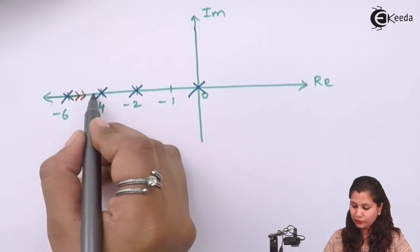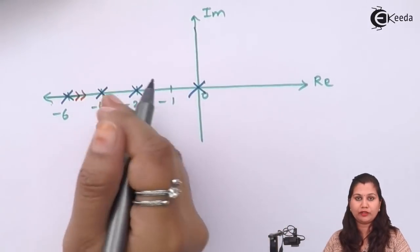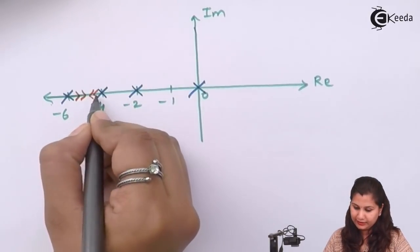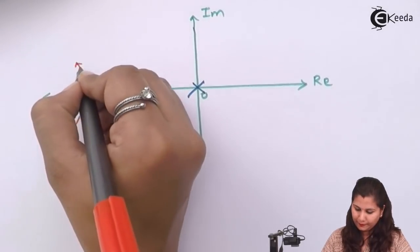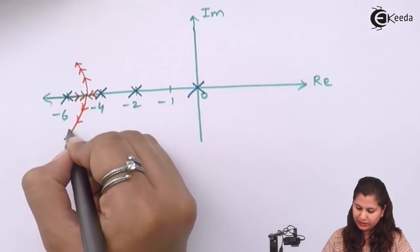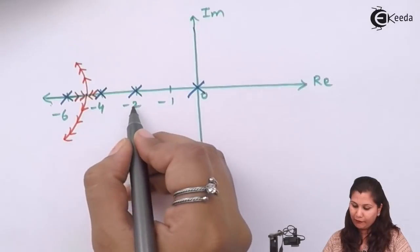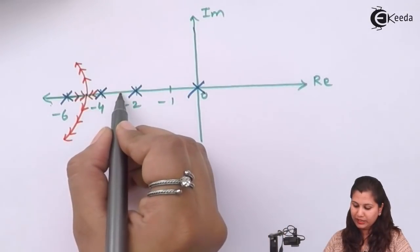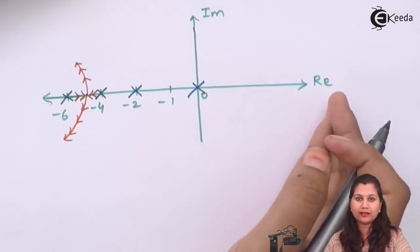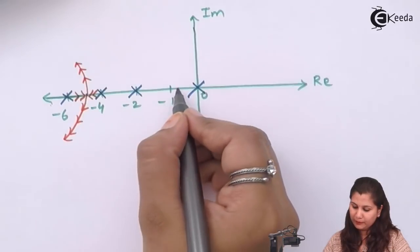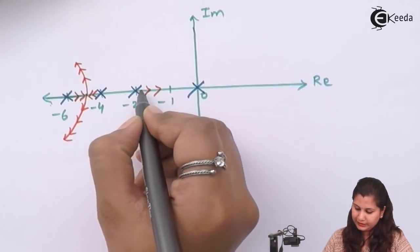Now for s equals to minus 4, if we take a point here, then 3 poles are there, so direction will be towards infinity. So the root locus branches are going to meet and then diverge at some point — there will be a breakaway point. Now for minus 2, if we take a point here, then 2 poles are there, so direction will be towards the origin. And for s equals to 0, if we take a point here, then the direction will be towards infinity. So it will be like this.